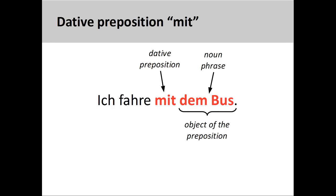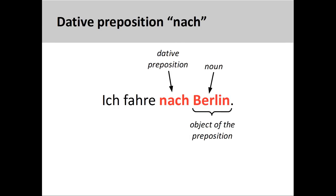The preposition 'nach' can have several meanings. When used with geographical locations, such as cities and countries, it can mean 'going to' or 'traveling to.' For example, 'ich fahre nach Berlin' — I am traveling to Berlin. When talking about locations within a city or people, however, you need to use the preposition 'zu,' which we will look at shortly.